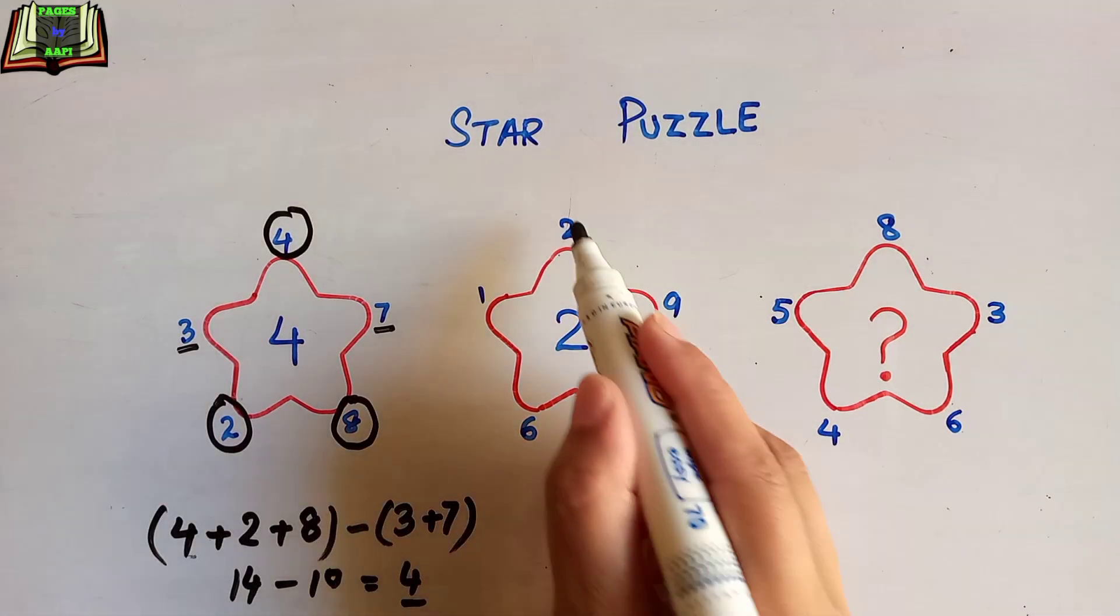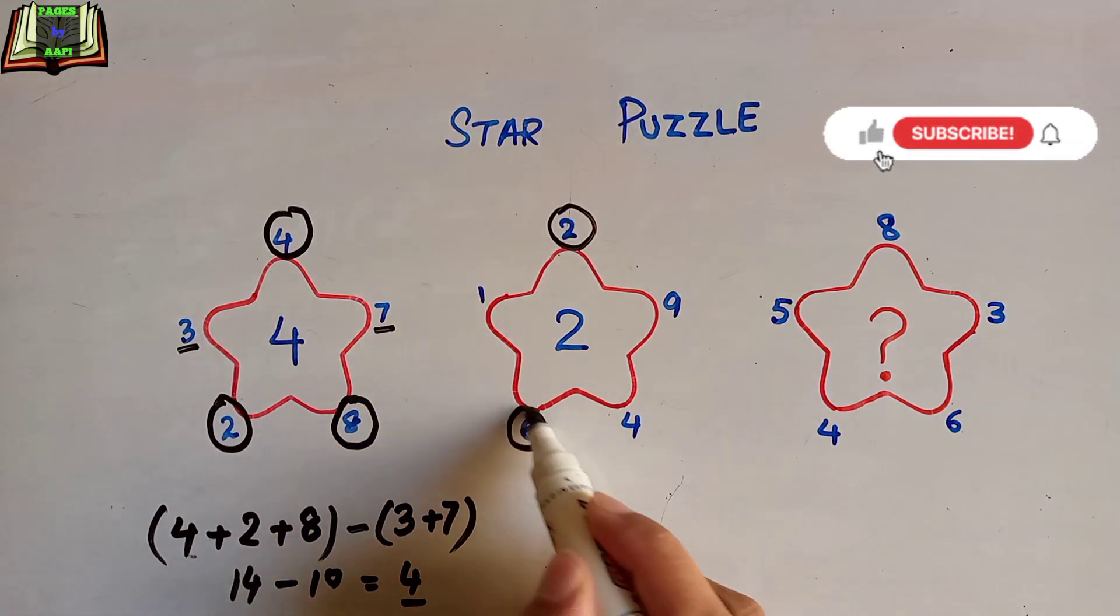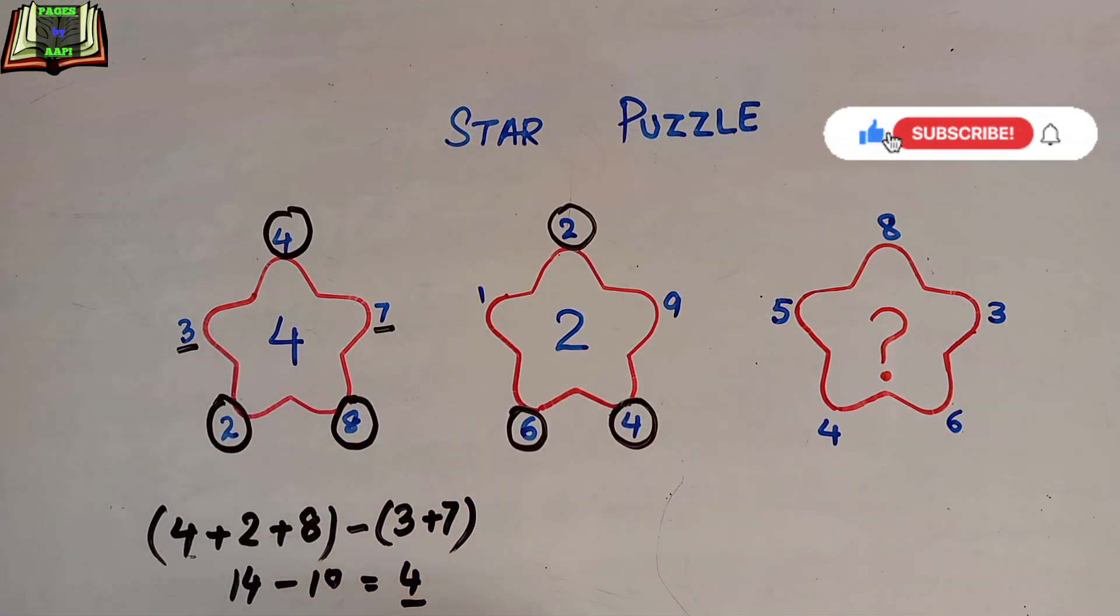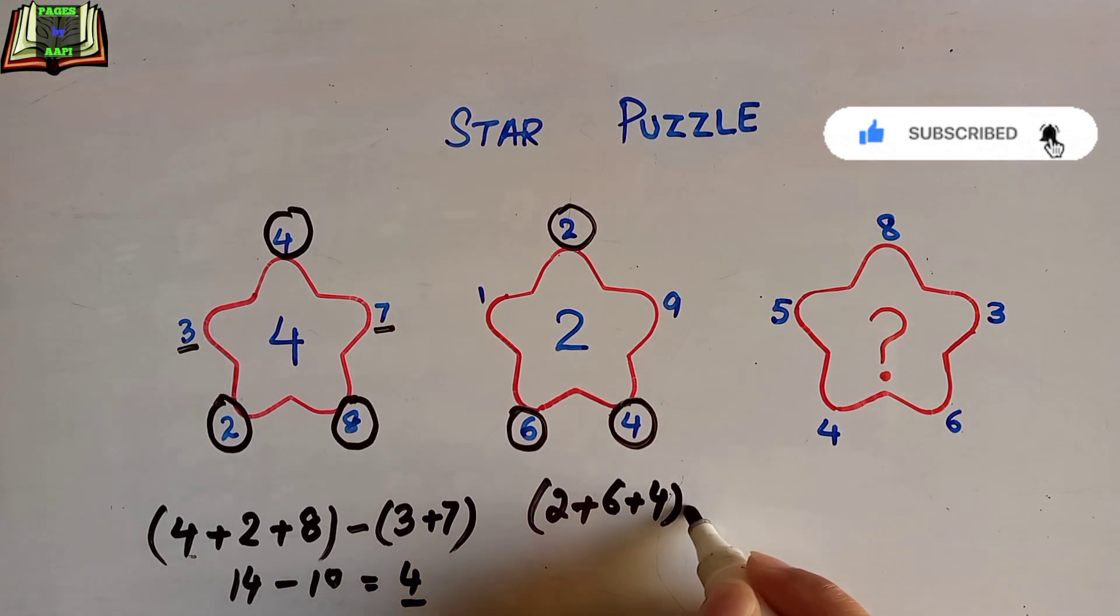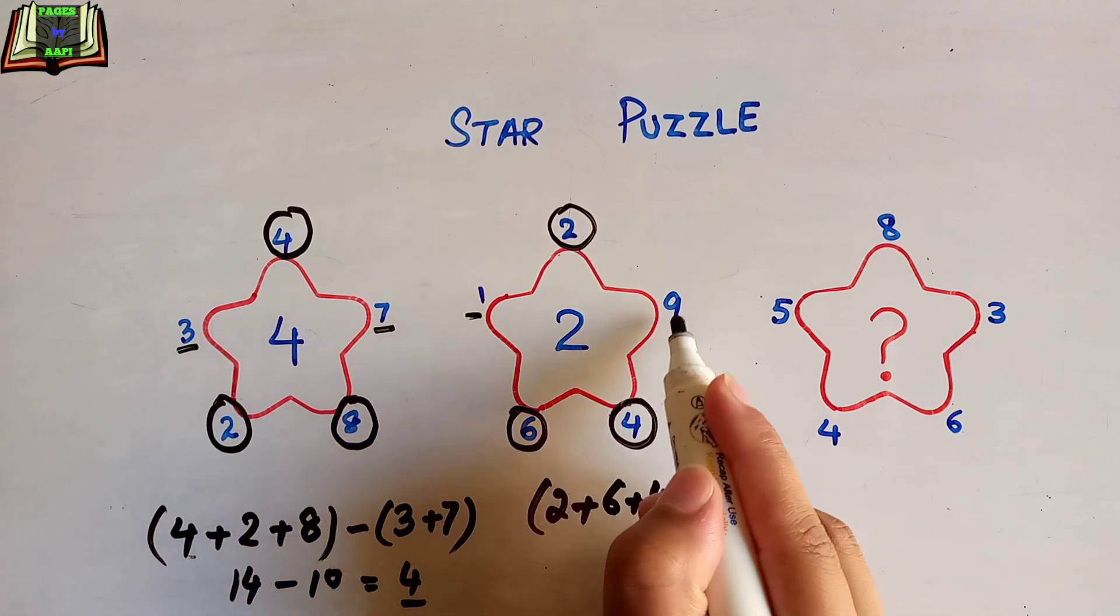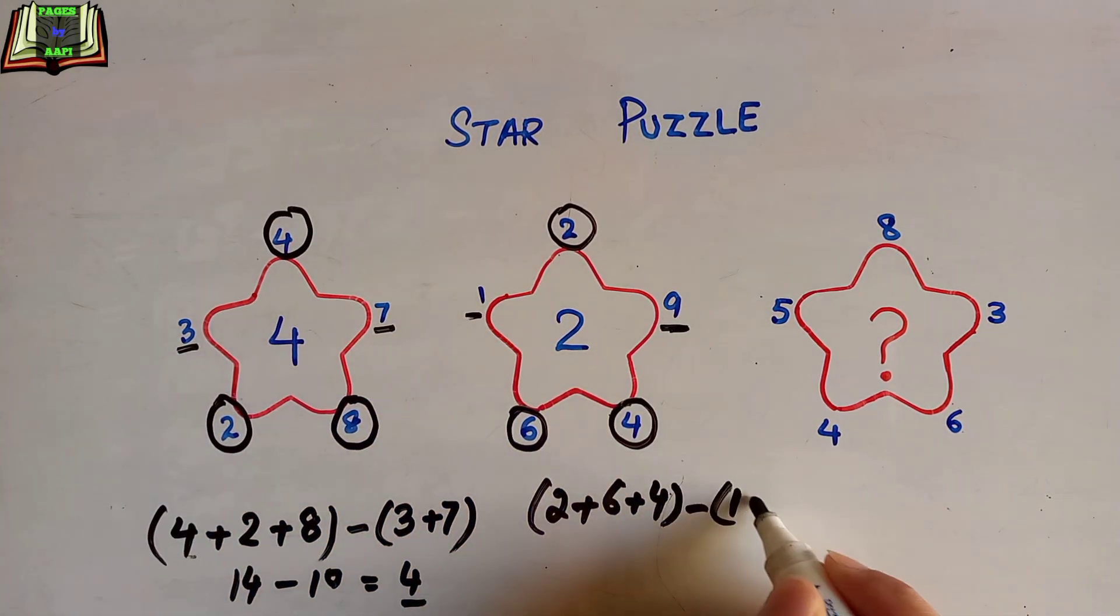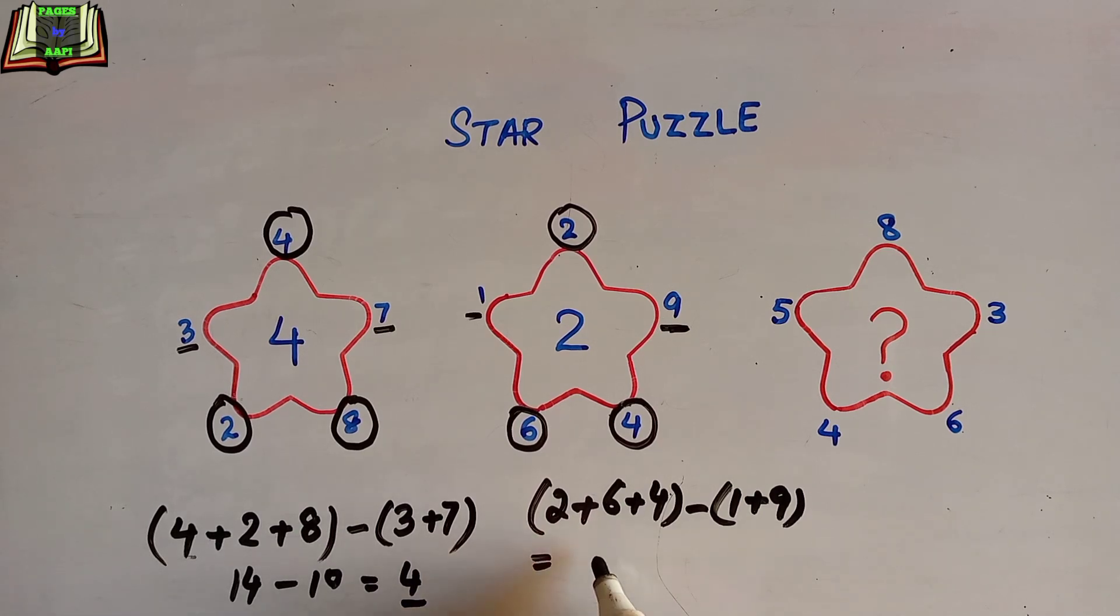Look at these three corner numbers. We will add 2 plus 6 plus 4, minus these two numbers added: 1 plus 9. Let's solve: 6 and 4 is 10, and 2 is 12, minus 1 and 9 is 10, which equals 2.